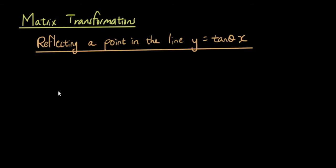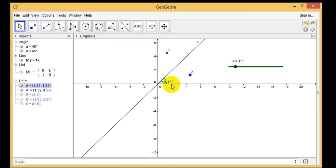Hello everyone, this is Eddie the Magic Monk. Welcome to the last lesson on reflections. Now we're going to reflect a point in the line y equals tan(θ)x. So what is the line y equals tan(θ)x? Well, basically it is just a straight line where the angle between the line and the x-axis is theta.